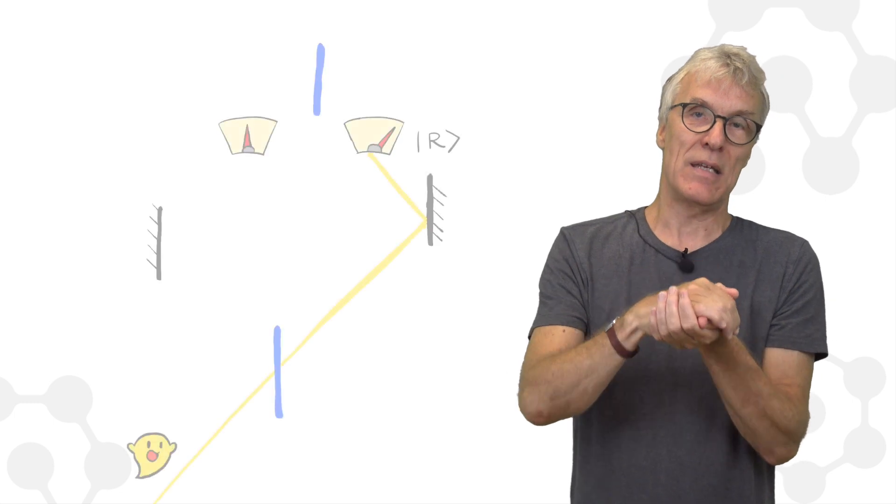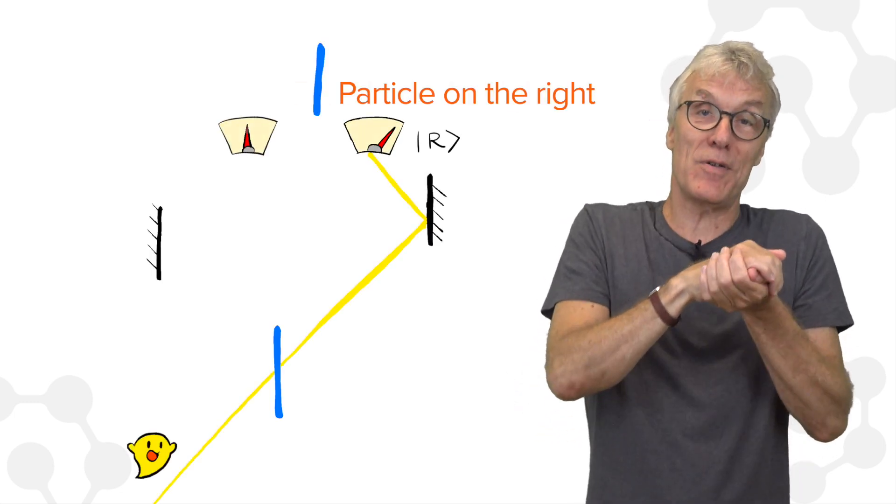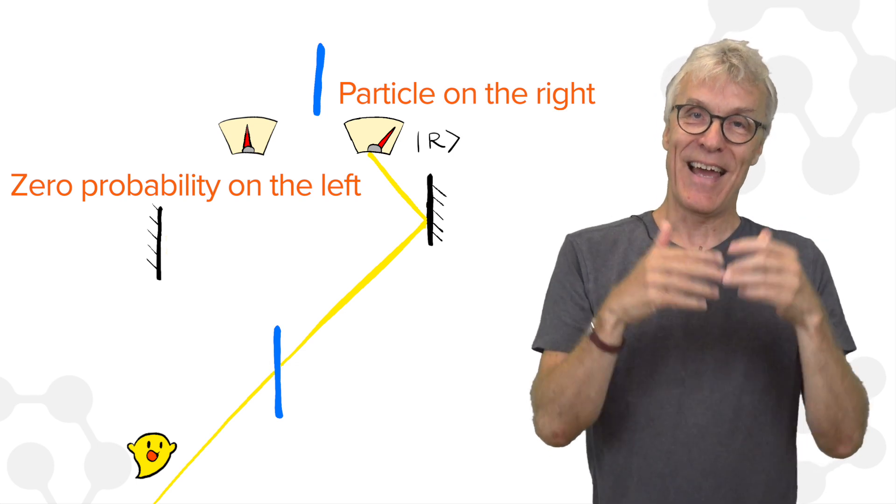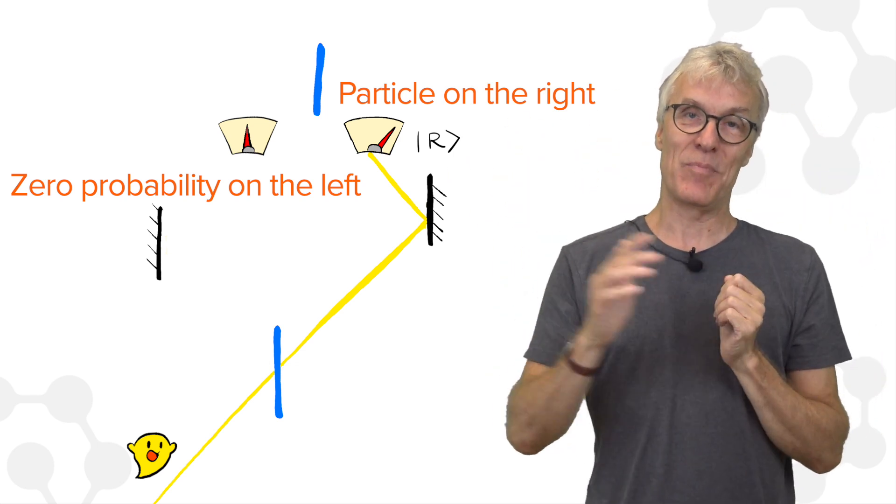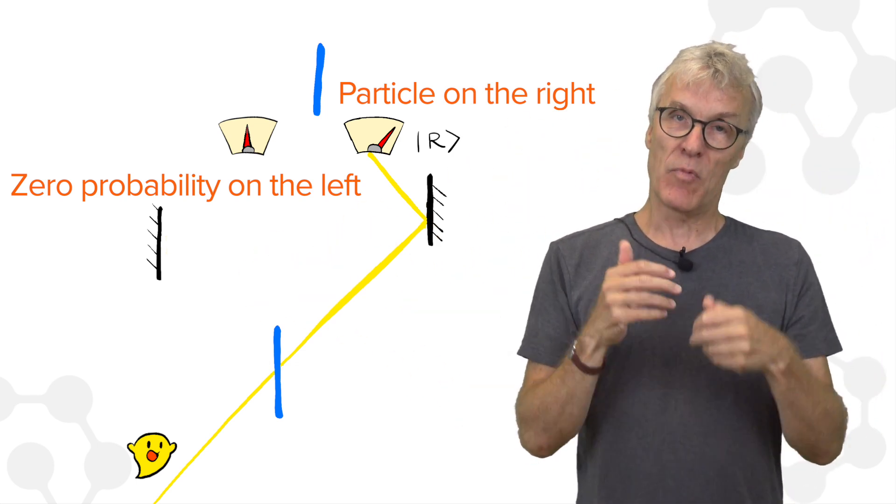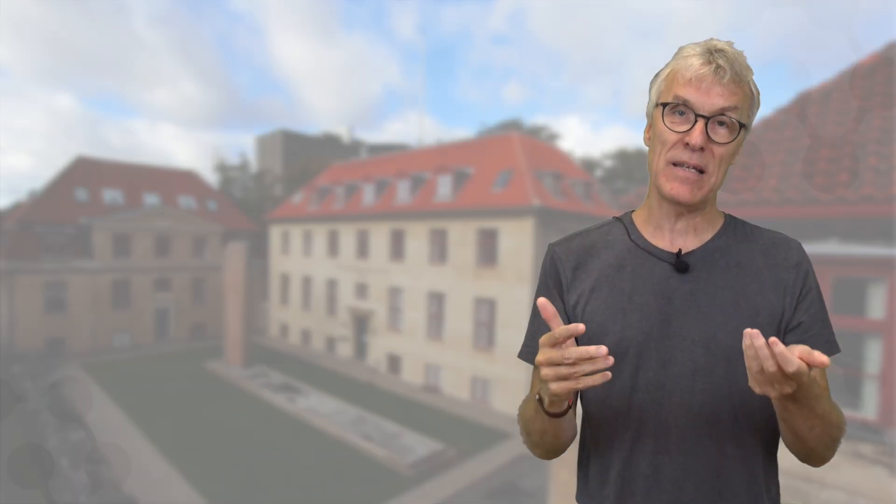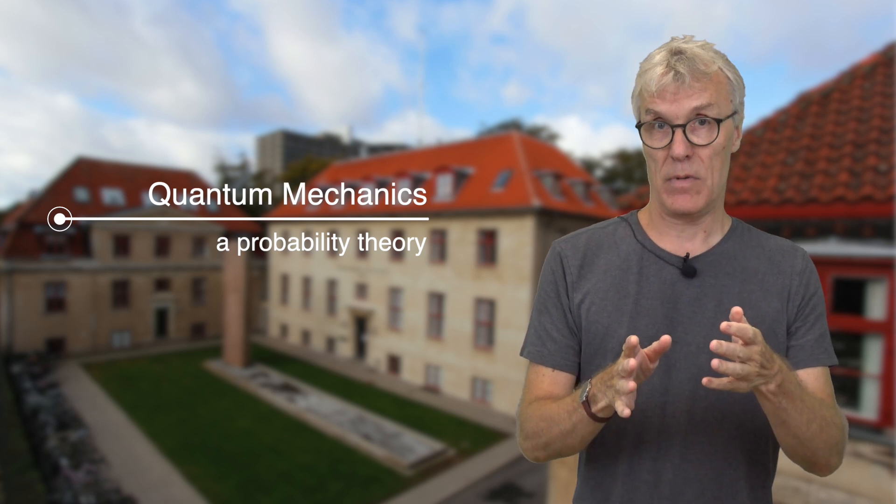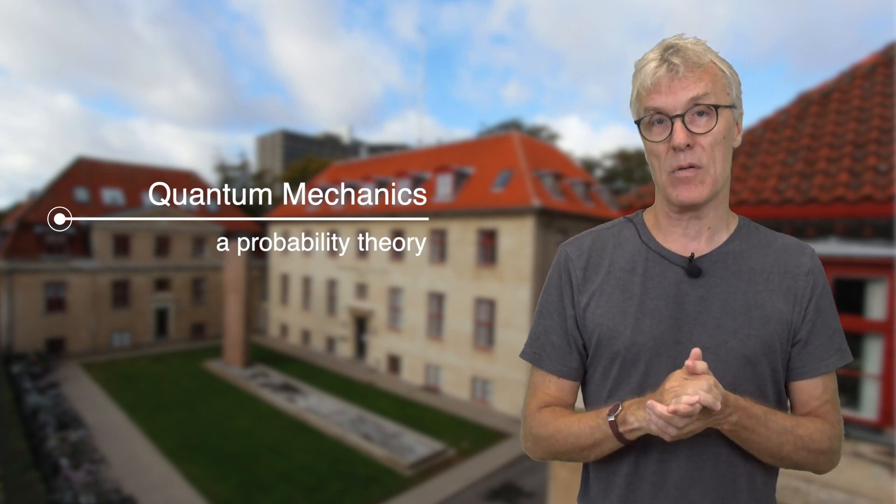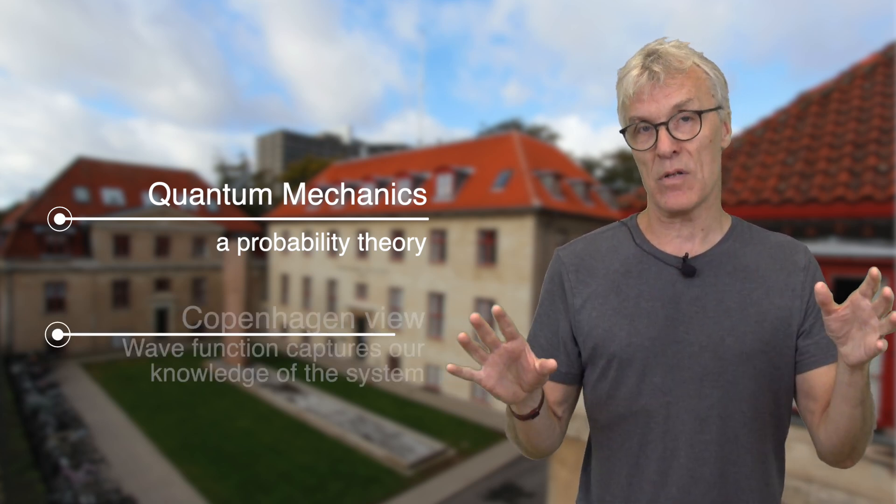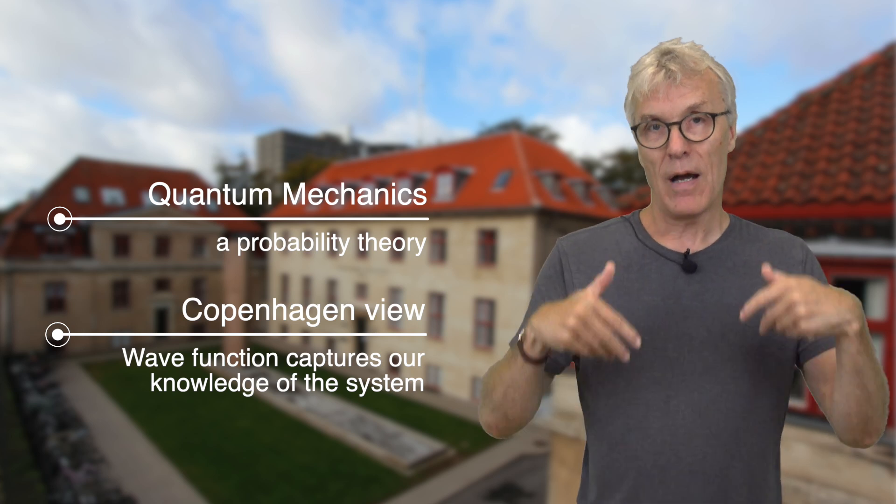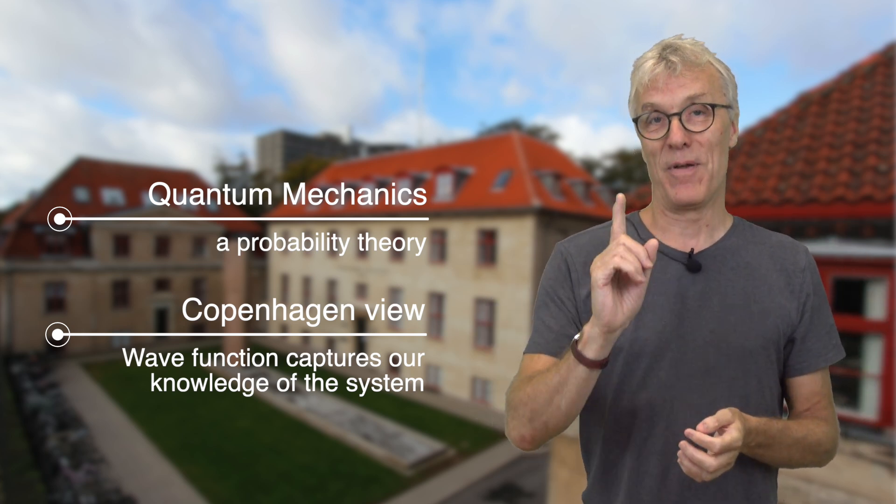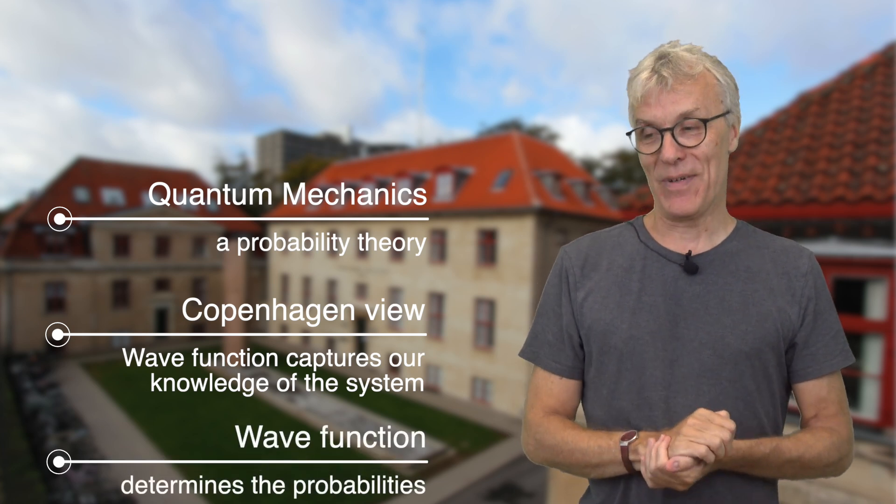And you can see how this resolves this issue I mentioned with the wave function before, that learning something can actually instantly make probability zero for the alternative to happen. And this is difficult to understand if it's a physical transformation of the particle. But it's easy to understand if it's just our knowledge we're talking about. With that essence of probability description, the Bohr view or the Copenhagen view on quantum mechanics is a logical one. There's no paradox in quantum mechanics.